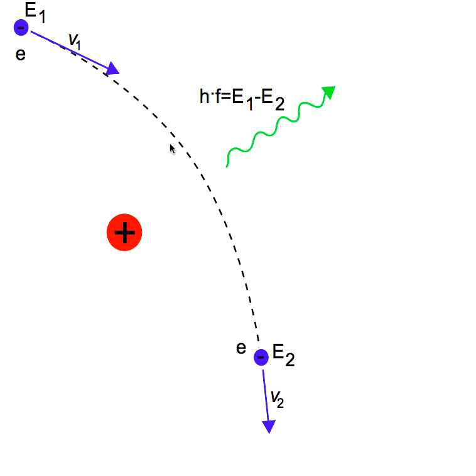You see that bremsstrahlung in that sense is a little bit hard for us to control. We can have a broad spectrum that's going to span the entire potential that we have. The other thing to know is that it actually can represent up to 85 percent of the electron interactions with the target.